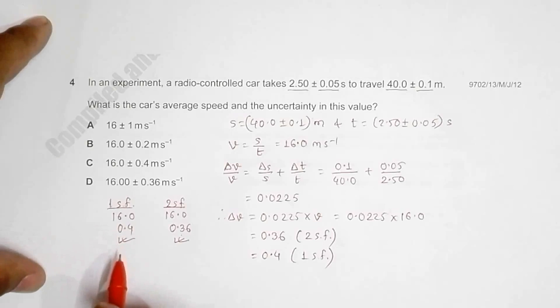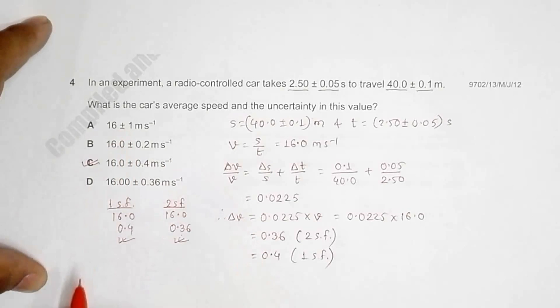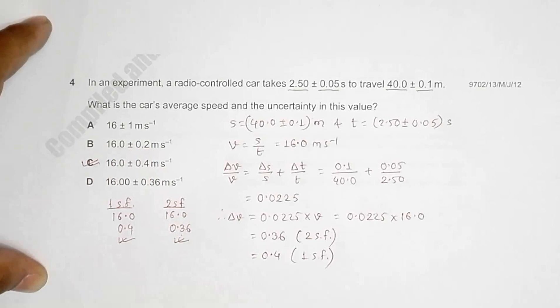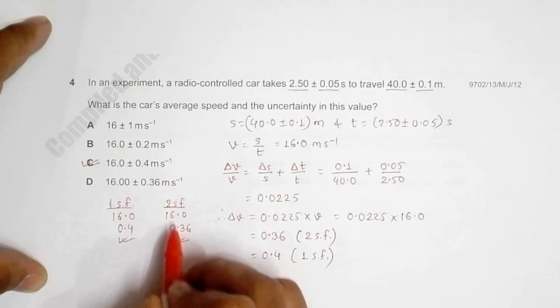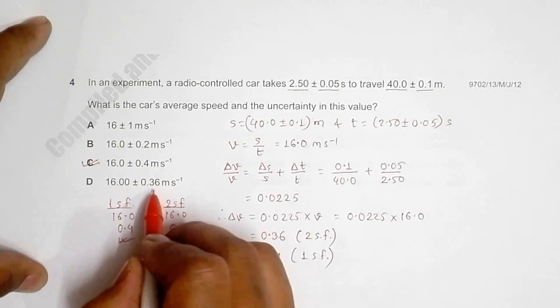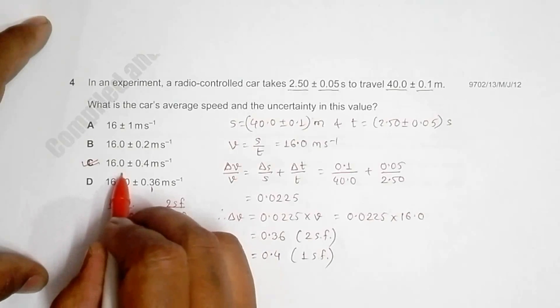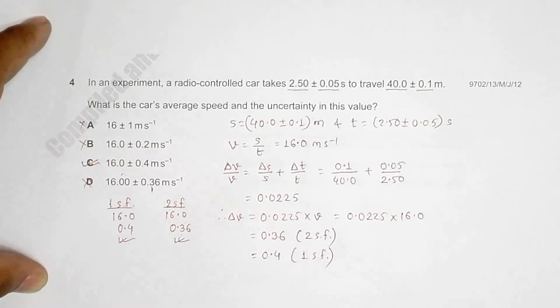If we go through the choices, then choice C is correct. Choice B is not correct because it has expressed error as 1, so 0.4 cannot be rounded off to 1, and here the amount of error is not correct. C is correct. In D, we have 0.36 which is correct, but this quantity goes one digit more, starting from the first digit after decimal and going beyond to the second, so this is not correct. D is incorrect and only choice C is correct.